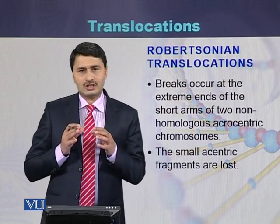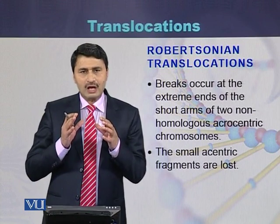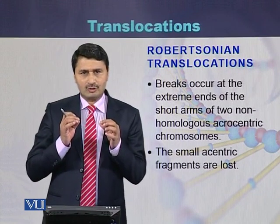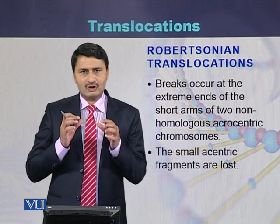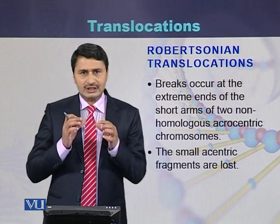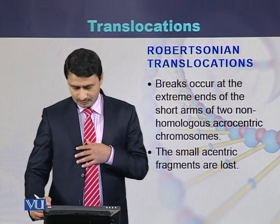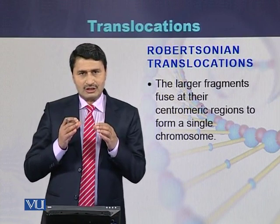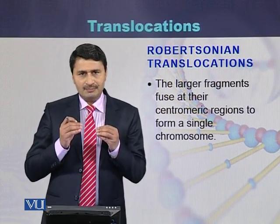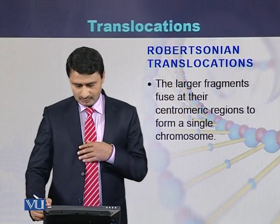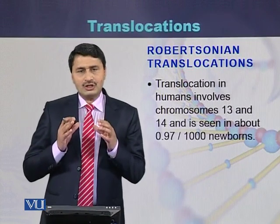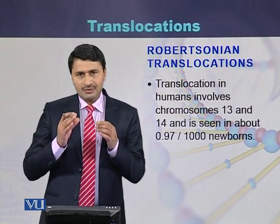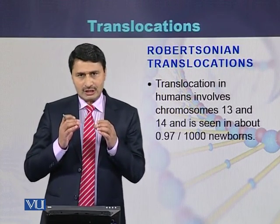Robertsonian translocation usually occurs between two acrocentric chromosomes. During this kind of translocation, the smaller parts of the chromosomes are deleted and the larger fragments fuse with each other to form a single chromosome. Robertsonian translocation occurs between chromosome 13 and chromosome 14, which is a normal phenomenon in humans.